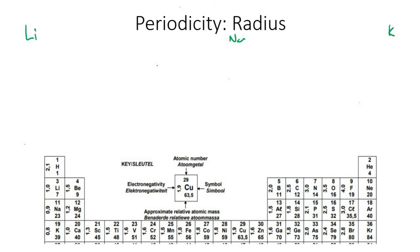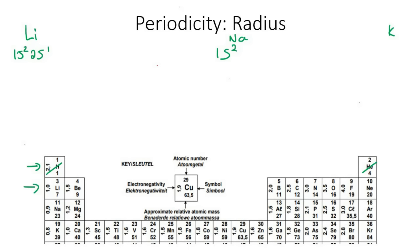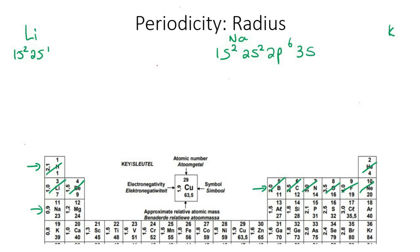When we look at the electron configuration of lithium, we get 1s2, 2s1. For sodium, you start at row 1, enter the S block and block off 1 and 2. Then row 2: S block, block off 1 and 2; P block, block off 1 through 6. Then row 3, enter the S block and block off 1. That's the electron configuration of sodium.